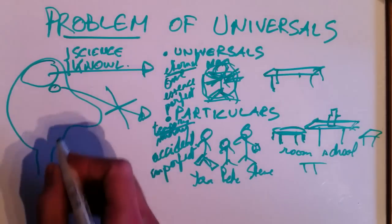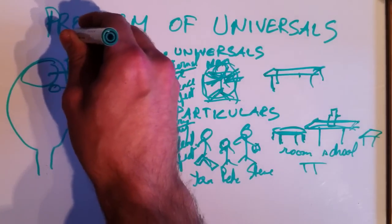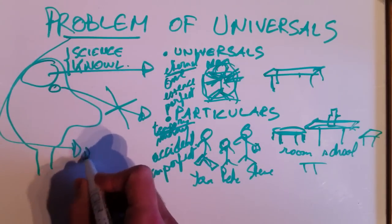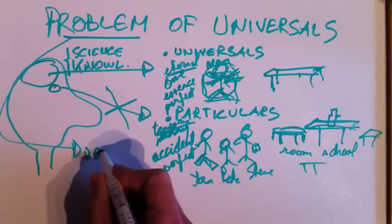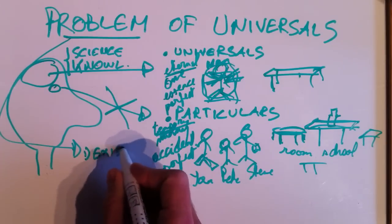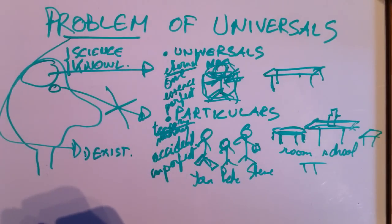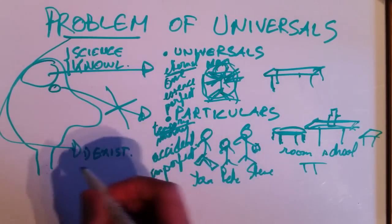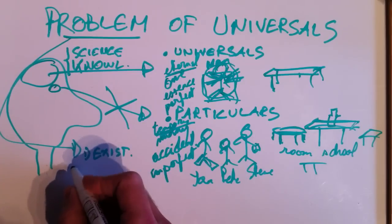Therefore, one can ask the question. So if we talk about the problem, there's one problem, and that is about the existence of universals. Do they really exist? We don't observe them, so do they exist? And philosophers have taken different stances on that issue.